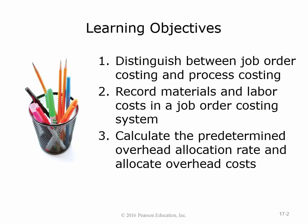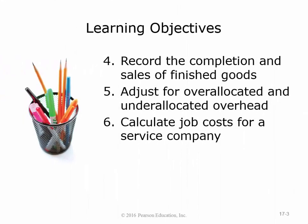We're supposed to distinguish between job order costing and process costing, then record all of the entries for this type of costing. Part three is the predetermined overhead rate — this is the part that confuses everybody every year, so take notes. Then record the completion and sales of finished goods, and adjust for over- or under-allocated overhead. Part six is easy. So it's three and five that are the problems for most people.